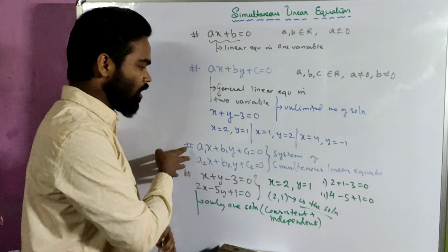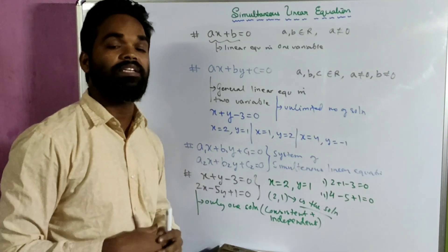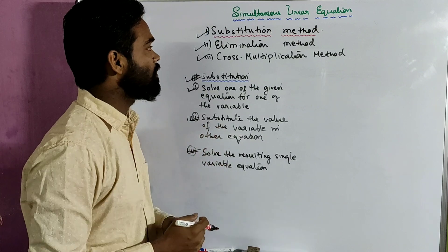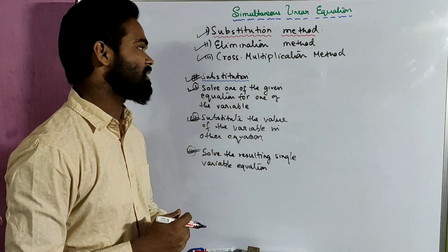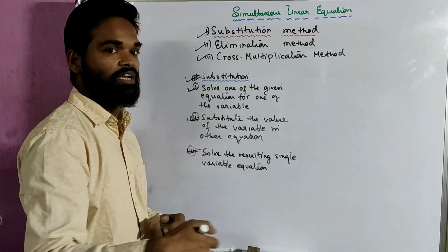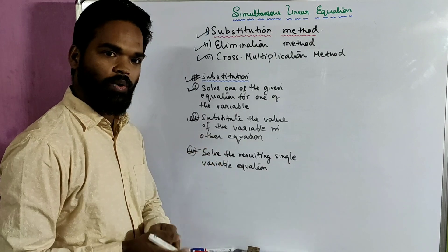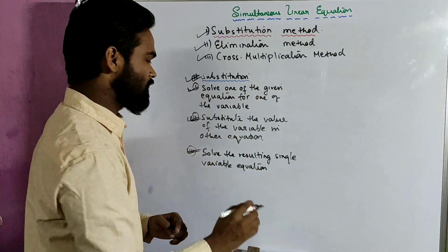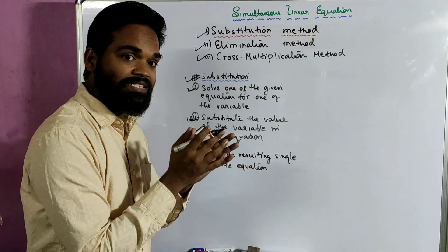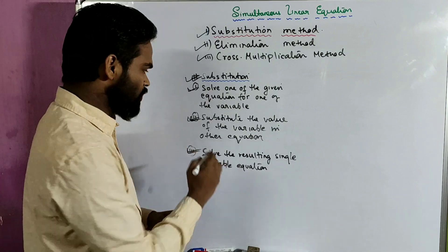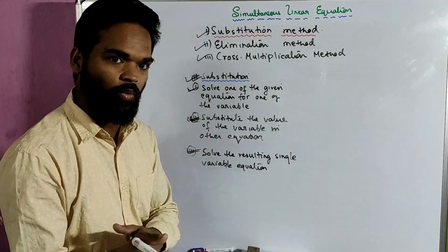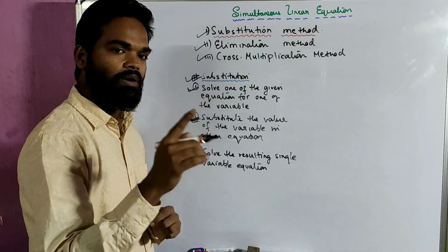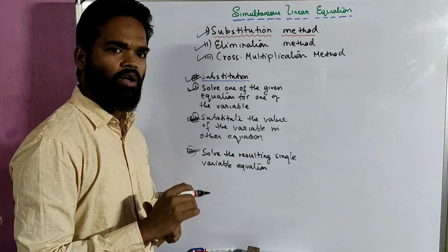Now we look at how to solve a given system of simultaneous linear equations. Simultaneous linear equations can be solved by three methods: the substitution method, which we will discuss in this video; the elimination method; and the cross multiplication method, which we will discuss later. For the substitution method, there are three steps. First, take one equation and make either x or y the subject. Then substitute that value into the other equation — the second equation becomes a linear equation in one variable, which can be solved easily. Once that variable is solved, put its value into any of the equations and solve for the other variable.